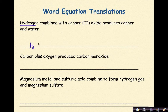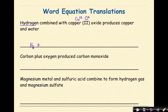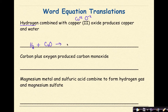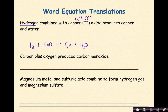Combined with is represented as a plus sign. Copper 2 oxide — copper with the Roman numeral 2 means it's Cu plus 2. Oxide is oxygen, and oxygen is O minus 2. The plus 2 and minus 2cancel each other out, so this is CuO. Produces is an arrow. Copper by itself is just Cu, plus the formula for water, H2O. That's translating this word equation into a formula equation.